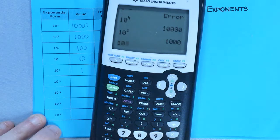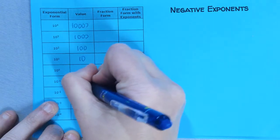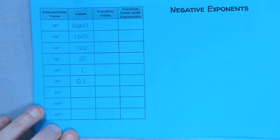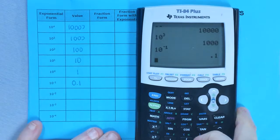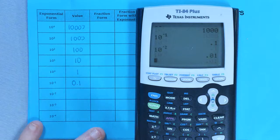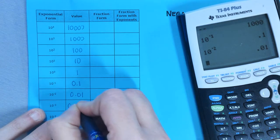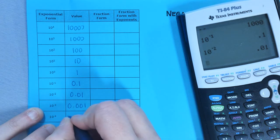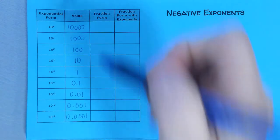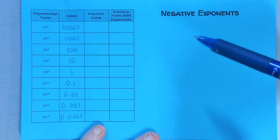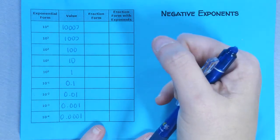Now, 10 to the negative 1, let's put this in my calculator. 10 to the negative 1 gives me 0.1. And tomorrow in class, I will show you a video that explains to you exactly why that 0 is important. 10 to the negative 2 gives me 0.01. 10 to the negative 3 is going to give me 0.001. And 10 to the negative 4 is going to give me 0.0001.